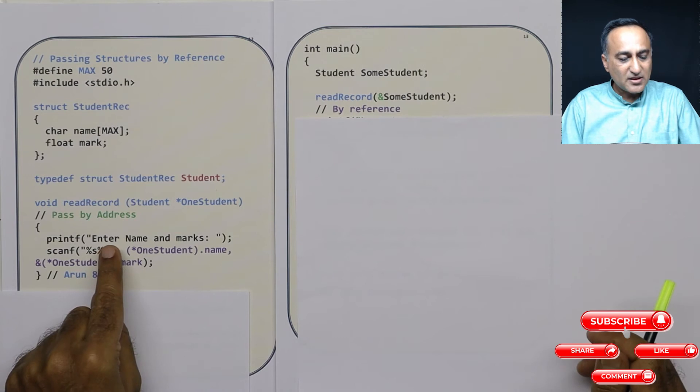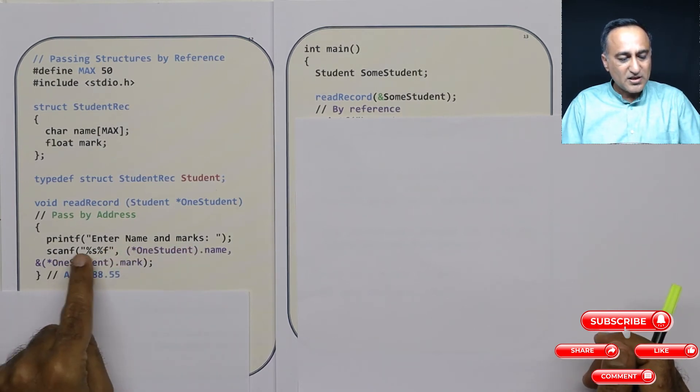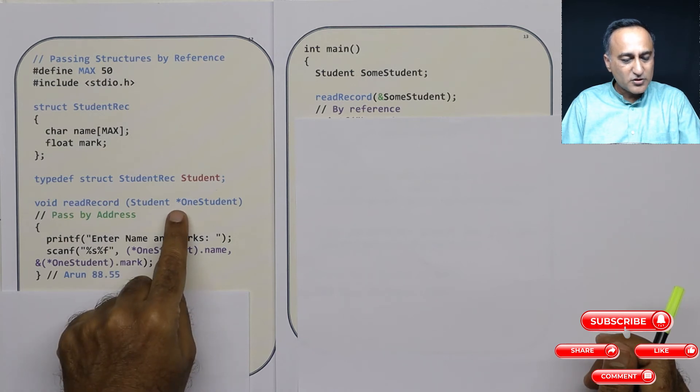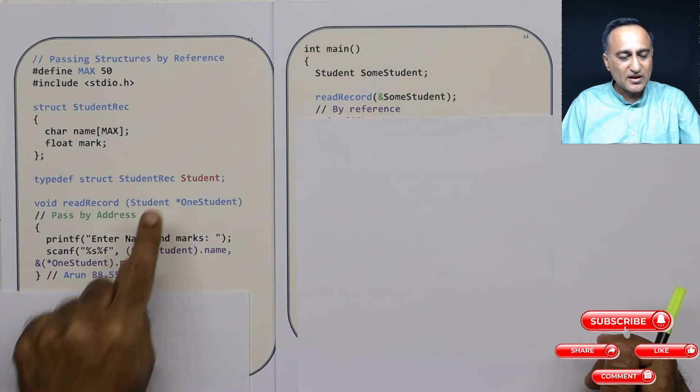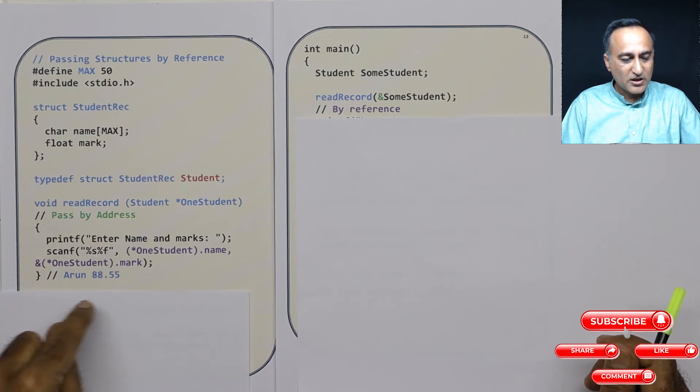Now I am asking the user to enter the name and marks. So using scanf, if it was without the star, I would have said one student dot name. But since it's a pointer, I am saying star one student dot name.